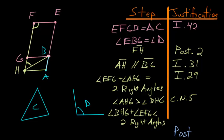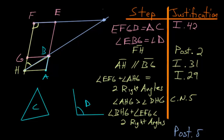Since lines BH and FE have interior angles adding up to less than two right angles, we know by Postulate 5 that if we extend these lines BH and FE, they'll eventually meet. So let's extend these lines so they meet somewhere up here, and we label this point K.